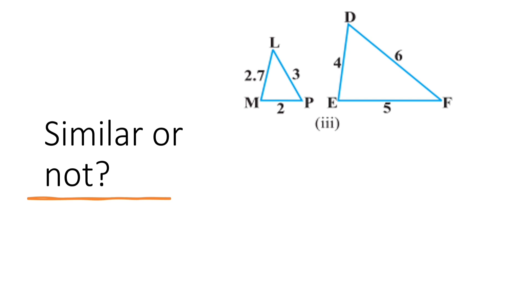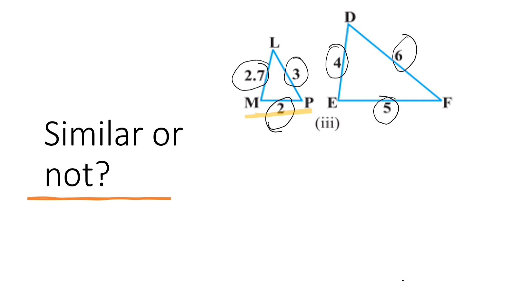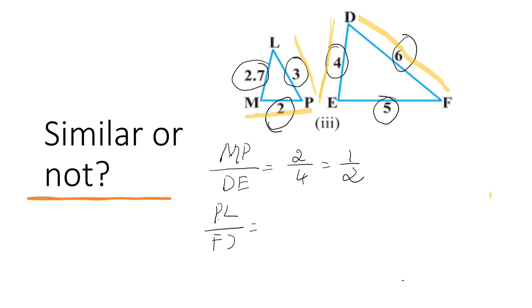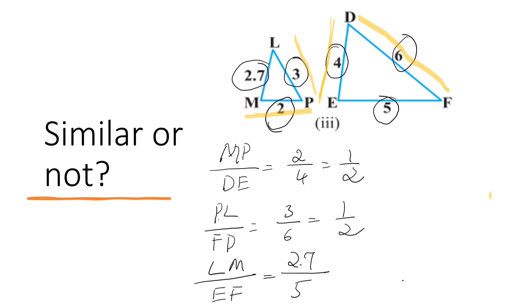Now let us solve the third part. Here also 3 sides are given. Let us try the SSS similarity criterion. We observe that 2 twos are 4, and 3 twos are 6, but 2.7 into 2 is not equal to 5. So the triangles are not similar. The ratios: MP by DE = 2 by 4 = one half, PL by FD = 3 by 6 = one half, but LM by EF = 2.7 by 5, which is not equal to one half. So the triangles are not similar.